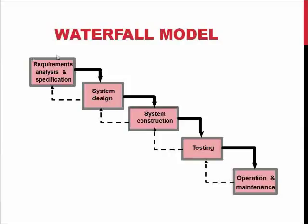Usually the waterfall phases are requirements gathering and specification, where we collect requirements from customers, from people who have ordered the software, or specialists who are good at identifying what problems we would expect with the selected platform or concept. The second phase is usually system design, where the system's architecture and technical definitions are made, followed by system construction — the programming work, development, and getting all the software components done and integrated with the hardware.